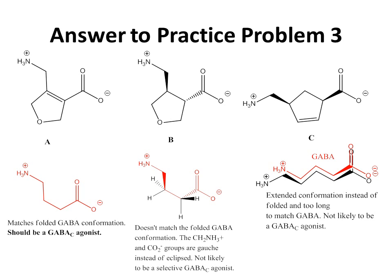In compound C, we can be fooled by thinking that the amino group and the carboxyl group are cis to each other, so this should be a folded conformation of GABA in a locked arrangement. But if you actually look at it, GABA is not as long as the molecule in terms of the distance between the carboxyl group and the amino group — this is actually an extended conformation of GABA. It's too long, and as an extended conformation, it's not likely to be a GABA-C agonist.